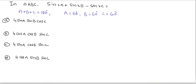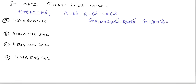Substituting these values in the given problem: sin(2×60) = sin120, so we get sin120 + sin120 - sin120. The two sin120 terms cancel, leaving sin120 = sin(90+30), which is in the second quadrant, equal to cos30 = √3/2.